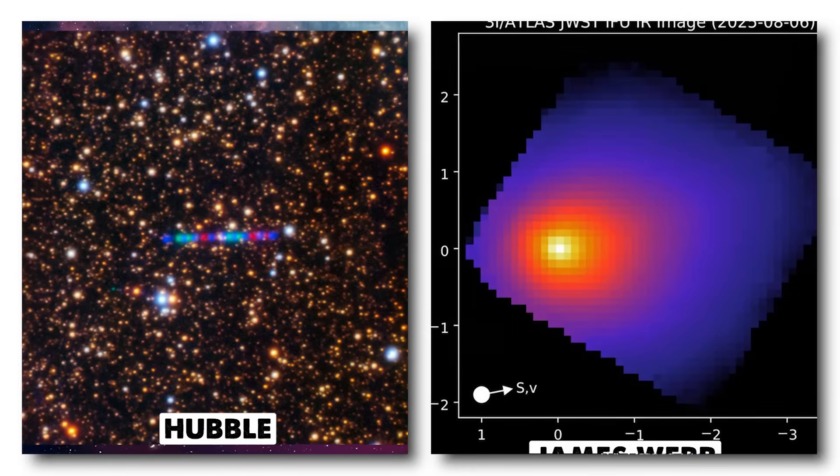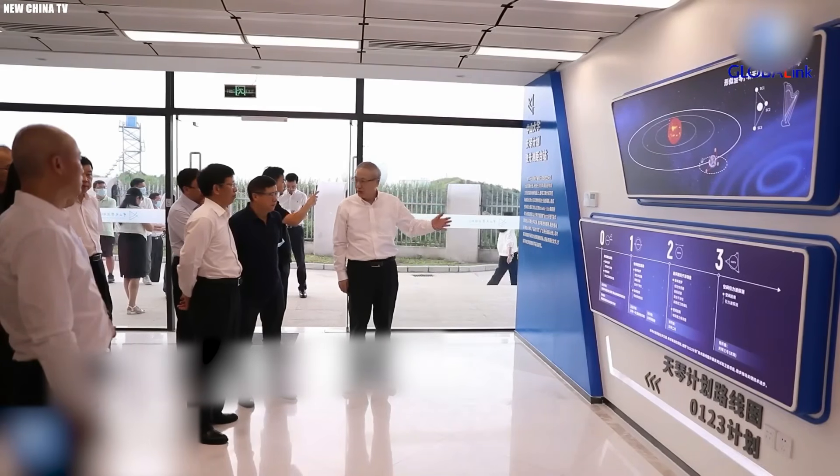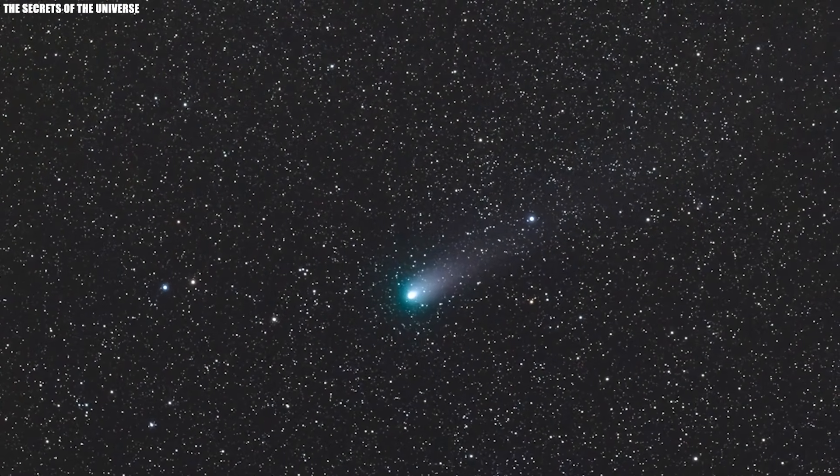Images from Hubble, James Webb, and several of the world's top ground-based observatories simply stopped appearing. And for an object like 3I Atlas, silence is not normal.